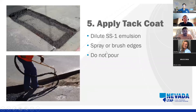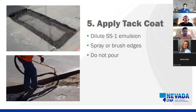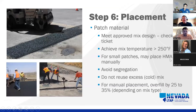Step five — apply a tack coat. Use a typical SS-1 emulsion, spraying or brushing the edges rather than pouring it in. Apply to both the vertical faces and the horizontal area at the bottom of the patch to achieve a good uniform bond and provide impermeable joints at those locations.